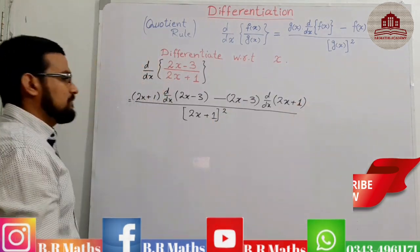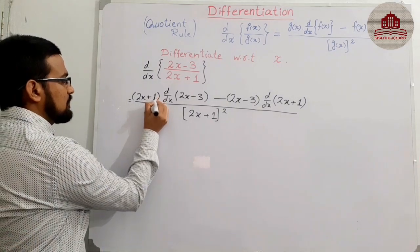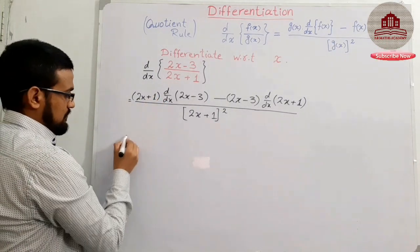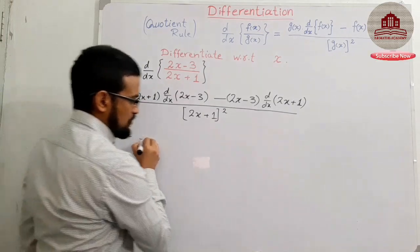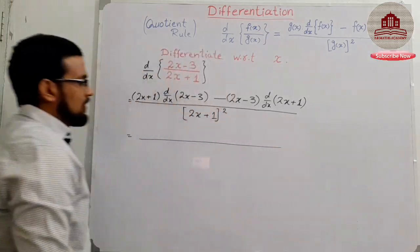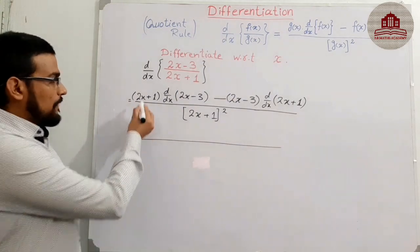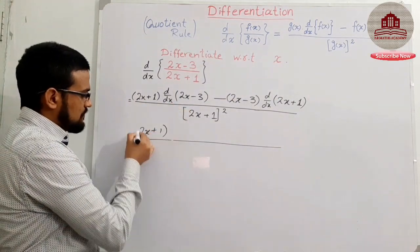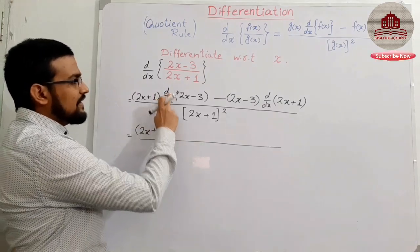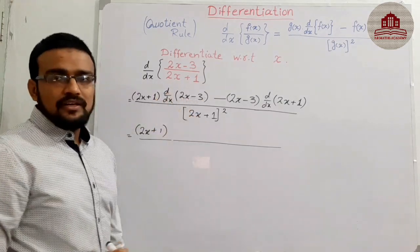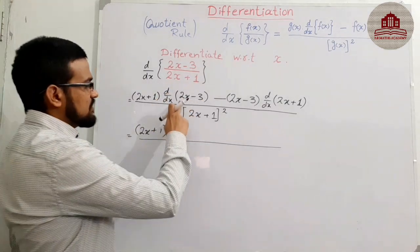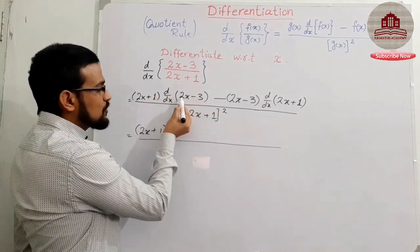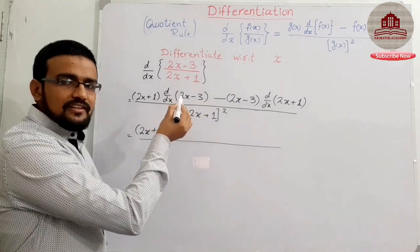The derivative of the denominator — okay students, this is the final starting step. Yes, 2x + 1 as it is. And the derivative of 2x − 3: as discussed in a previous lecture, 2x + 1 as it is. The 2 in 2x is a scalar number.